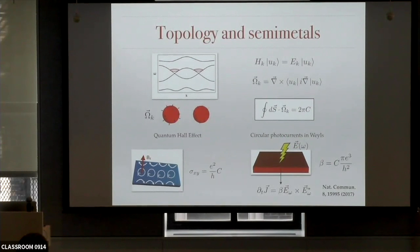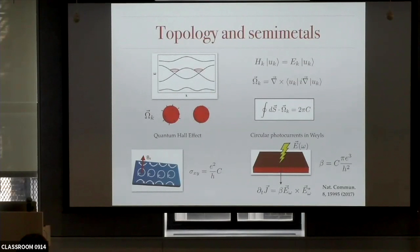So this is the punchline of the experiment. You shine circularly polarized light, this produces a current, and this current in the simplest expression looks like this. This is the degree of circular polarization of the current. This is the imaginary part of E of omega. The coefficient here is quantized in terms of fundamental constants only — the same thing as in the Hall effect — so there's p, e cubed, and h squared. The coefficient here is the Chern number of the node. So there's a way of measuring the Chern number by doing this type of experiment.